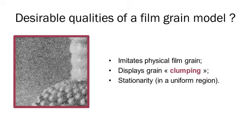Our film grain model should imitate actual physical film grain and display grain clumping, in other words the tendency of grains to form larger agglomerations. The model should also be stationary in regions of uniform grey level. These characteristics are all ensured by the use of a Boolean model, which is well studied in stochastic geometry.